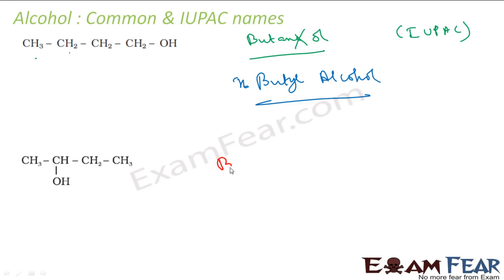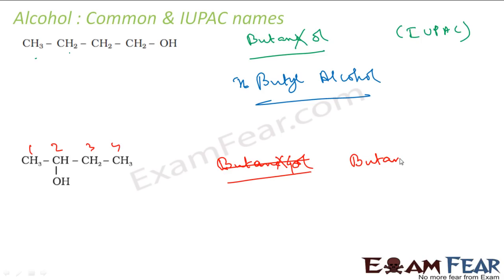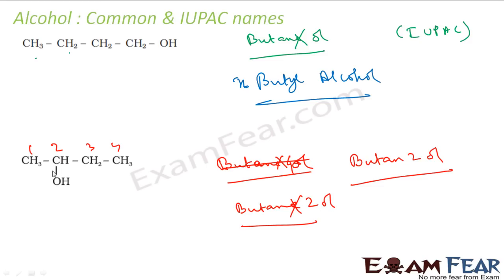Let's see this next compound — it is also meth-eth-prop-but, so it is from butane again. Remove '-e' and it becomes '-ol', so it becomes butanol. But this OH is at the second position — 1, 2, 3 — so it will be butan-2-ol. For the common name, this is butyl alcohol, but since the OH is on a branch position, it is sec-butyl alcohol.